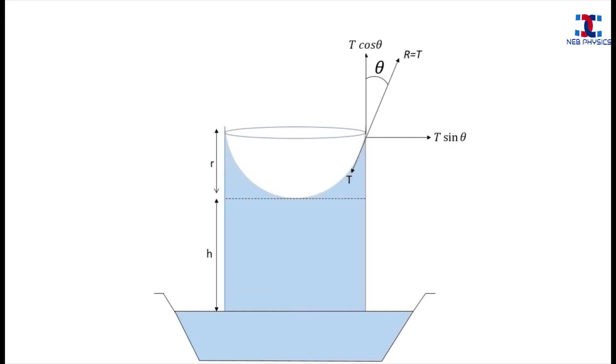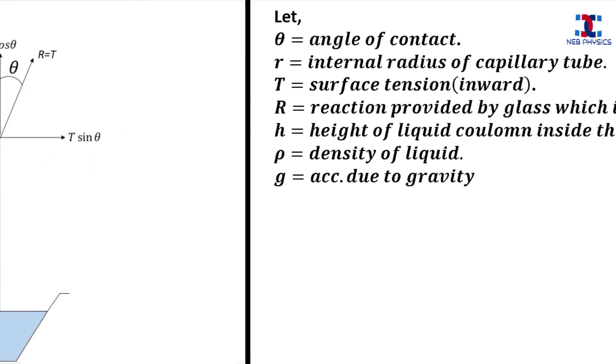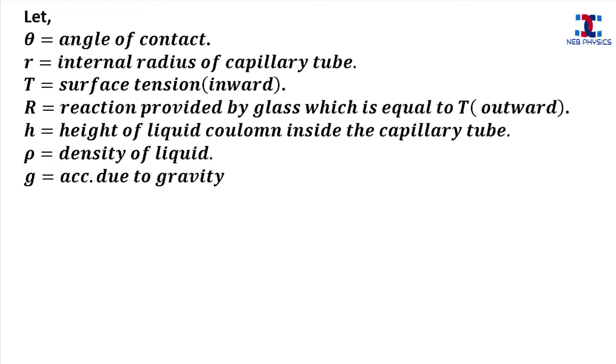Now, we can calculate the volume of liquid in the corners of the meniscus shown by yellow highlight by subtracting the volume of hemisphere shown by red highlight from the volume of cylinder shown by green highlight.